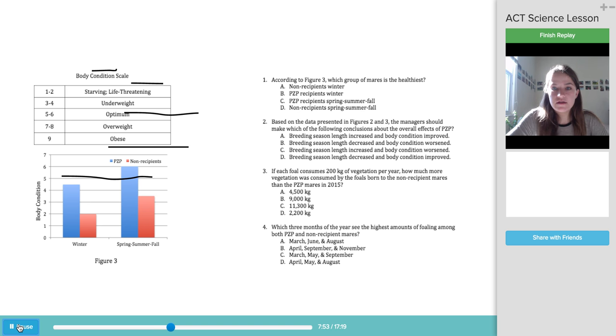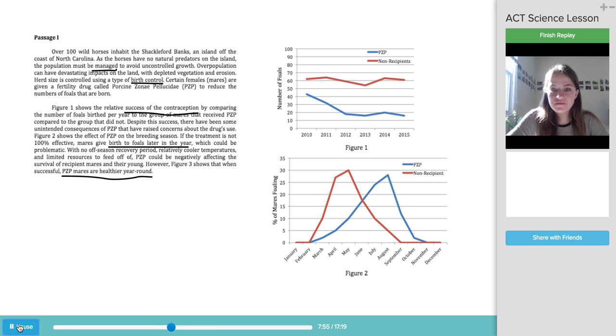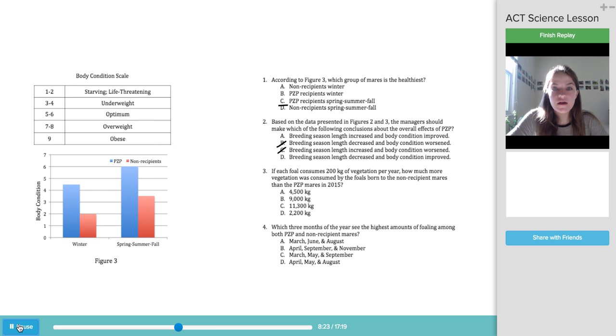So let's go back to the first part. So figure two here. Does the breeding season length increase or decrease for the PZP group? And so both groups start foaling in February, and the PZP doesn't stop until November, whereas the non-recipient group stops around September. So you can see that the breeding season length definitely increases for the horses with PZP. So here the answer is going to be A.